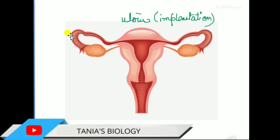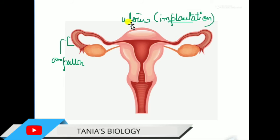The ampulla is the place where fertilization takes place. If anyone asks where fertilization takes place — it is in the ampulla of the fallopian tube. Fertilization takes place in the ampulla, and implantation takes place in the uterus — these are two different and very important points. The zygote is the first cell formed in our body after fertilization; if a zygote is formed, it comes and gets implanted in the uterus.